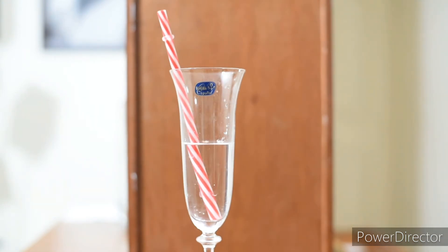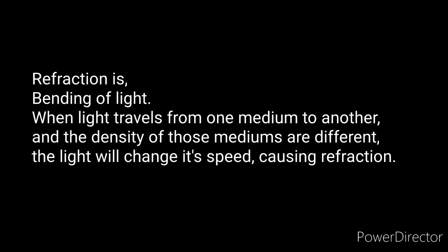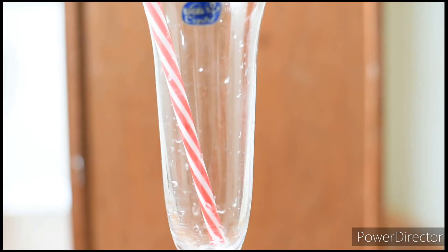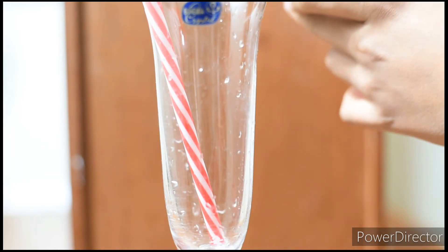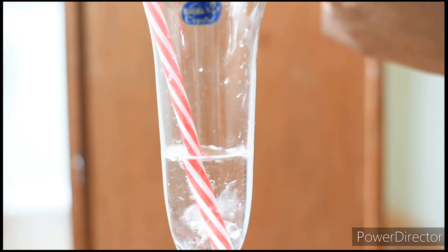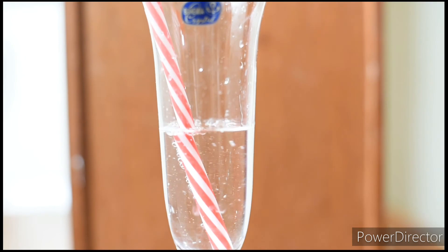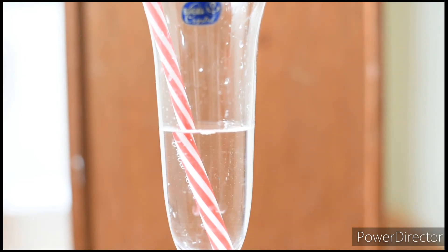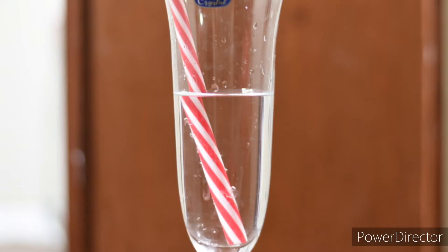This happens due to refraction of light. Refraction is the bending of light. Here, light travels from air to water. Water has high density, so the speed of light decreases. Hence the straw appears to be broken.